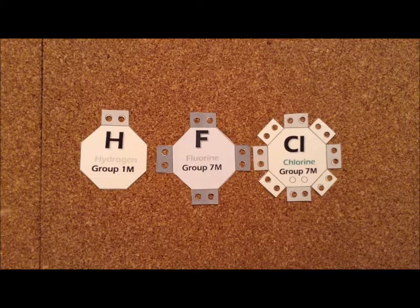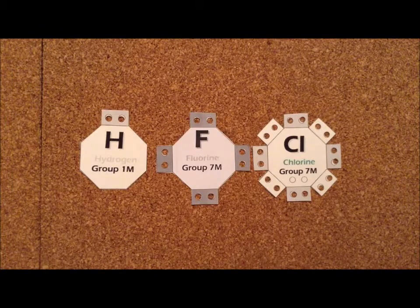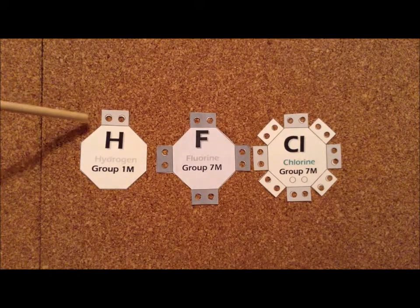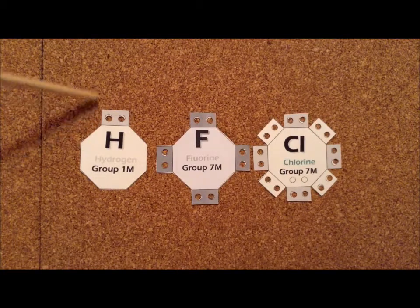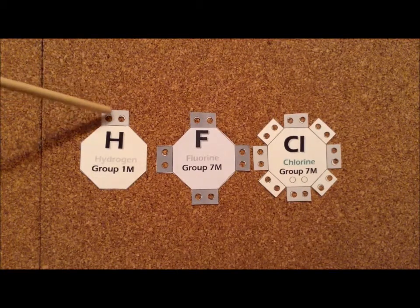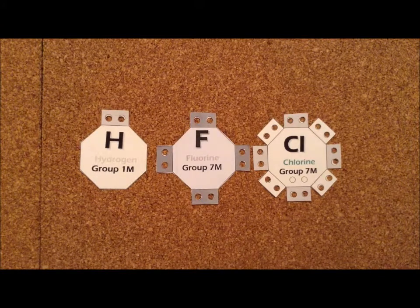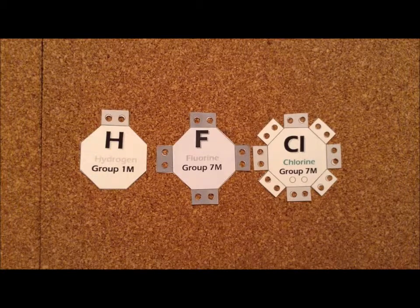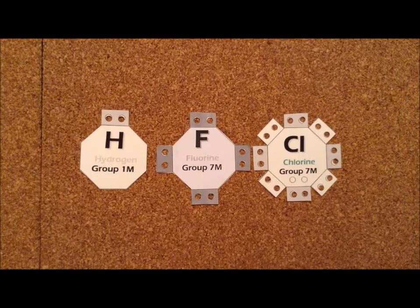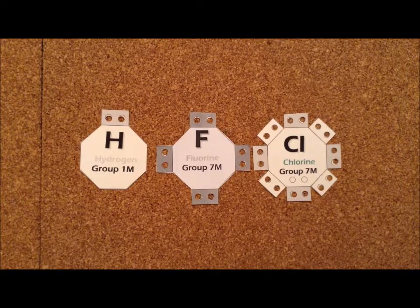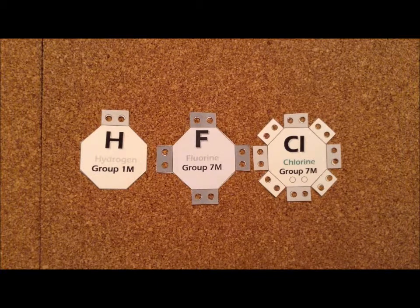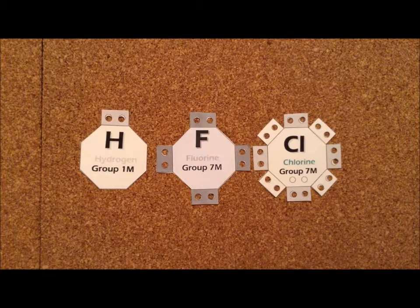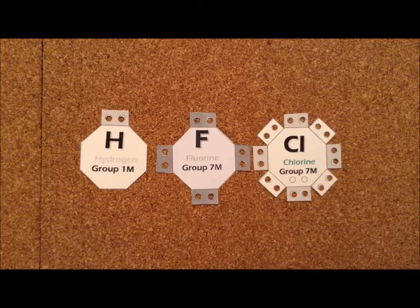Recall that for hydrogen, it wants to satisfy the duet rule. It wants to have two electrons, and we represented that in the card by showing this one region up here shaded gray that has two holes in it. The reason why hydrogen wants two and only two electrons is that, being in the first row, its valence shell is a 1s orbital. There is one 1s orbital and it can hold up to two electrons. Therefore that's where we get the two from in the duet rule.